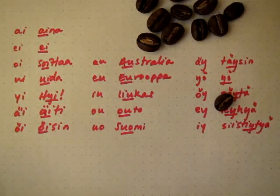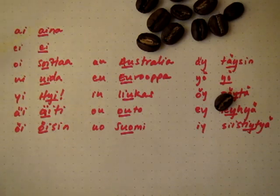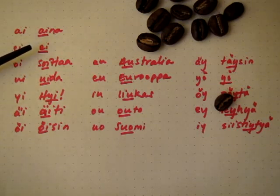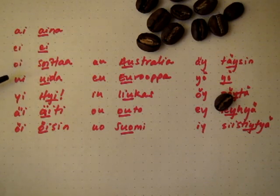Let's use some actual words to practice these diphthongs. Ui, uida, uida.